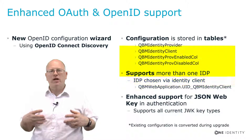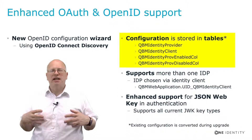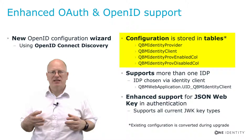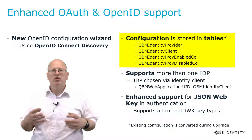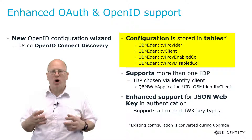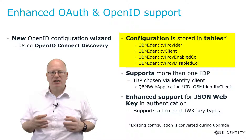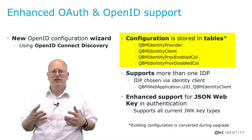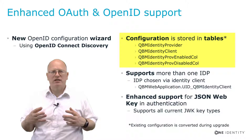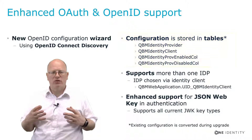What was done is a dataset was created — a table set in the Identity Manager database — to store OAuth configuration. As you can see on the right-hand side of the slide, QBM Identity Provider, QBM Identity Client, and so on are the tables where you will now find all of this OAuth configuration.